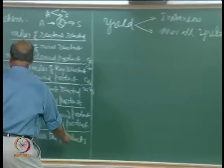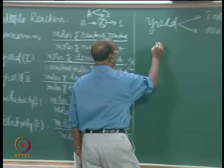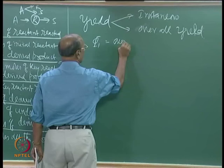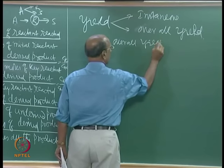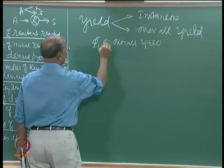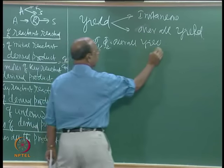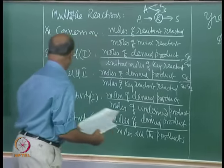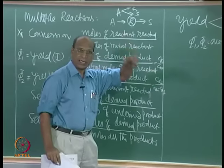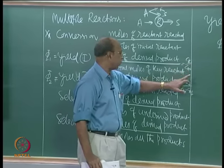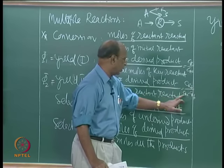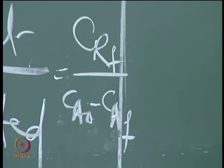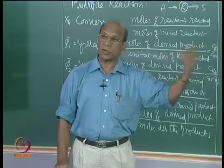Yields have instantaneous yield and overall yield. What we discussed — φ1 and φ2 — is the overall yield, because we write CRF/CA0 (φ1) or CRF/(CA0 − CAF) (φ2) at the exit of the reactor, after the entire reactor. That is why it is called overall yield.